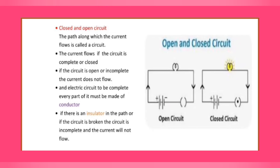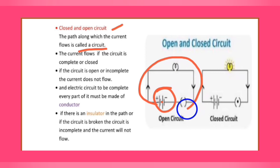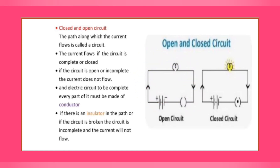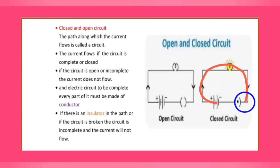The path along which current flows is called a circuit. If a battery is given, the current flows from positive to negative. Current flows only if the circuit is complete or closed — meaning the switch must be on and there should be no insulators in between. If the circuit is open or incomplete, current does not flow.